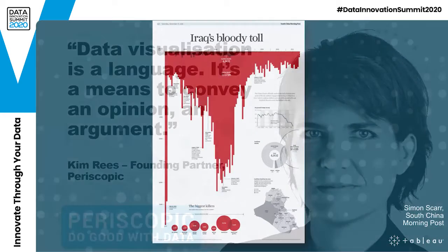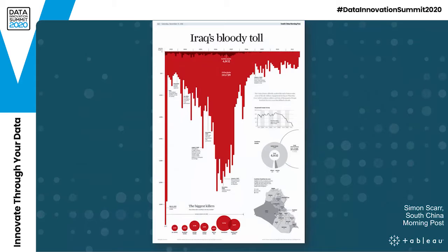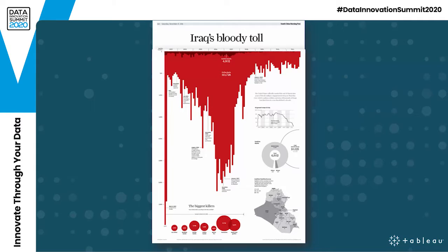Check out this example. It comes from 2011, by Simon Scarr of the South China Morning Post. It shows the number of deaths in Iraq month by month from 2003 to 2011. What do you see when you see this chart? You see a smear of blood dripping down the screen. Simon Scarr won awards with this, largely down to the fact that he chose the color red and pointed the bars upside down to make a really strong emotive response in the users.